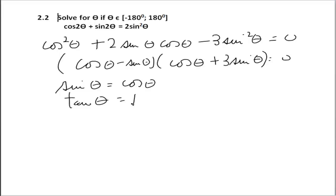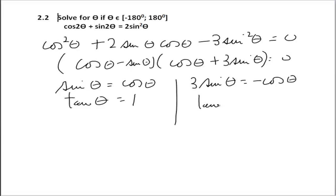On the other factor, 3sinθ = -cosθ. Dividing both sides by cosθ gives tanθ = -1/3. This tells us the equation is equivalent to solving tanθ = 1 or tanθ = -1/3, which corresponds to the multiple choice answers.